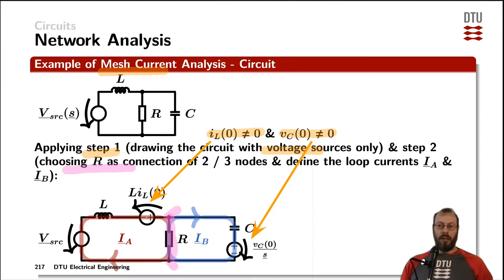That automatically leaves us with the two current loops Ia and Ib, which are linking the rest of the circuit to the resistor, where Ia is circling in the left loop and Ib is circling in the right loop.